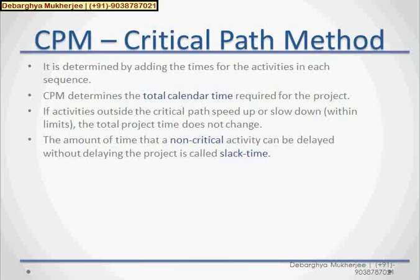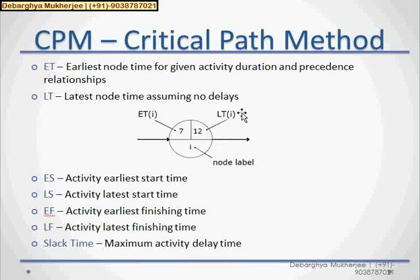And at the end, we can calculate slack time as well as critical path from this diagram. Now, let's take one example. In any critical path, we can have these parameters. ET means earliest node time for any given activity, duration and precedence relationship.